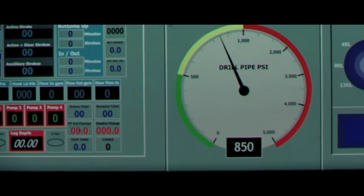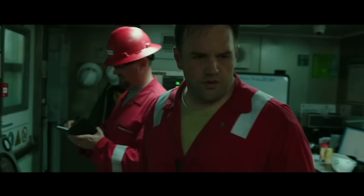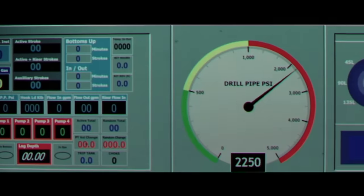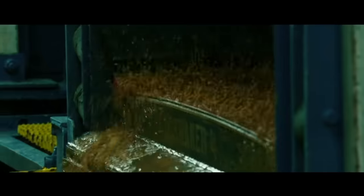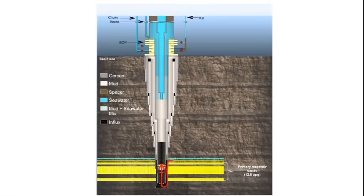Instead, drill pipe pressure increased by 100 PSI, indicating a problem with the well. Analysis of real-time data shows that a 39-barrel gain was taken by 2108. It was then time for the sheen test on the spacer, which is done to check that there is no free oil in the fluid that would be discharged to the sea. The pumps were shut down when the spacer reached the surface. A sheen test was performed and the spacer was determined to be suitable for discharging overboard. The drill pipe pressure increased by 246 PSI in 5.5 minutes while the pumps were off. Our modeling suggests that the well was flowing at an estimated 9 barrels per minute.